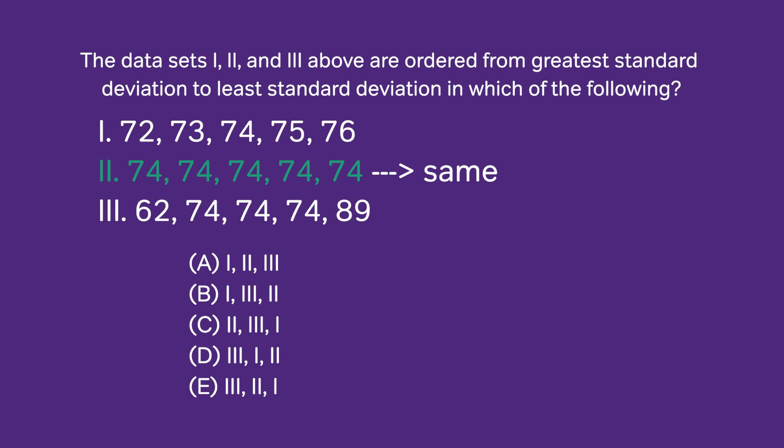And this means that the standard deviation is zero, and that is the minimum possible standard deviation for a list. So, definitely list number two is going to be our minimum. All the numbers are the same.